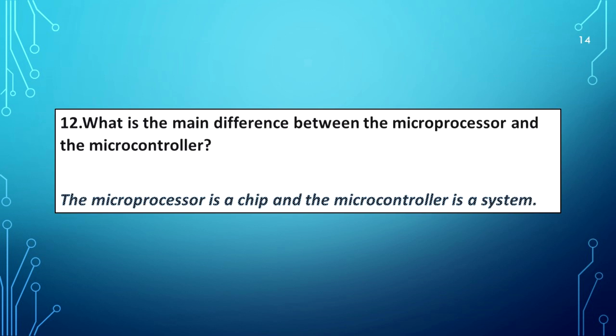What is the main difference between the microprocessor and the microcontroller? The microprocessor is a chip and the microcontroller is a system.